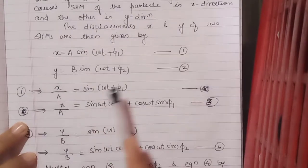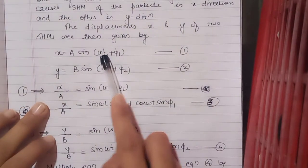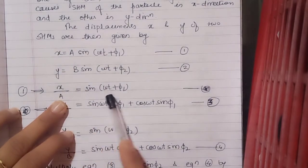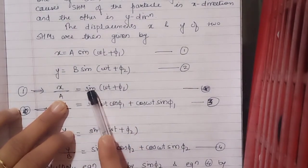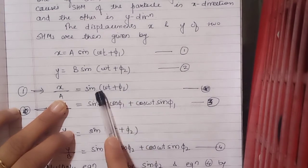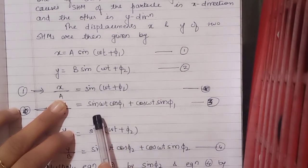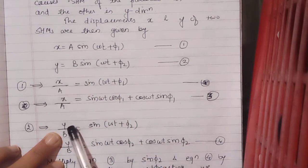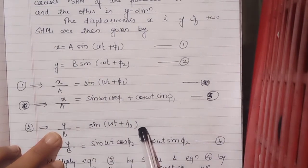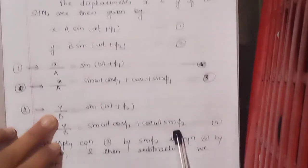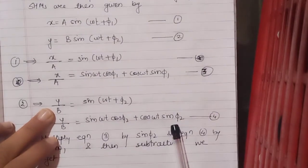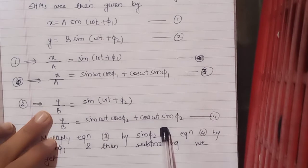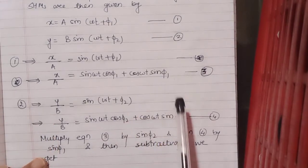I can rewrite this equation by dividing by a, so I get x/a = sin(ωt + φ₁), and I can expand sin(a + b) as sin a cos b + cos a sin b. Similarly, I can write y/b = sin(ωt + φ₂) and expand this using the same formula. So I obtained equation 3 and equation 4.